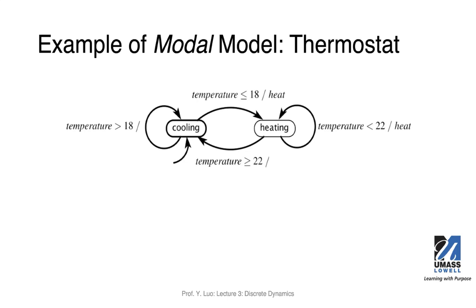Let's look at a thermostat example. A thermostat is used to control the temperature of a room. In this finite state machine, we have two states. Can you tell me which is the initial state? Cooling is the initial state. We have certain transitions, and one input — the temperature. Is the temperature a pure signal or a signal with a numerical value? It's a signal with a numerical value.